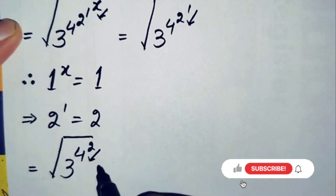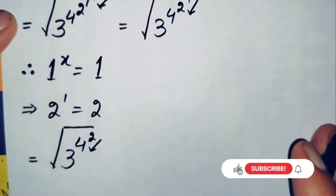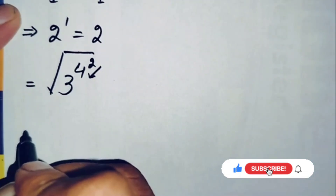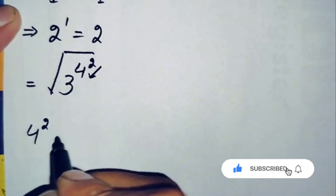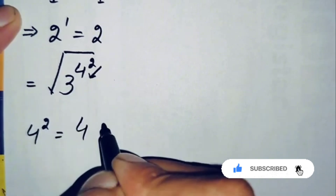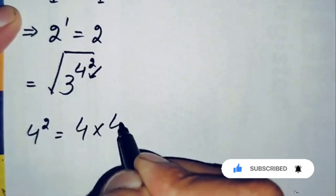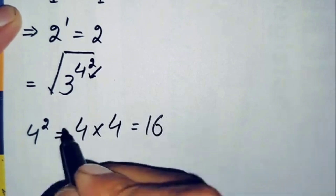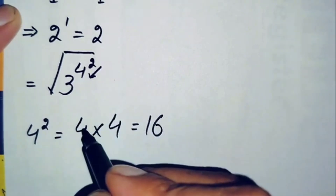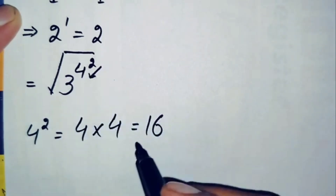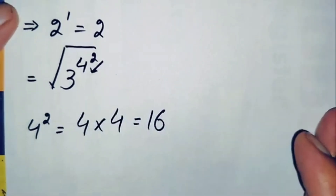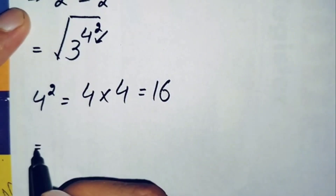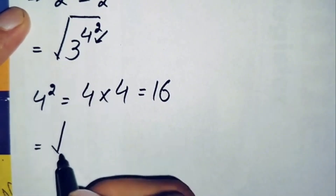Now the expression becomes the square root of 3 raised to power 4, raised to power 2. We find the value of 4 raised to power 2, which means multiplying 4 two times: 4 × 4 = 16. So we replace 4 raised to power 2 with 16, giving us the square root of 3 raised to power 16.